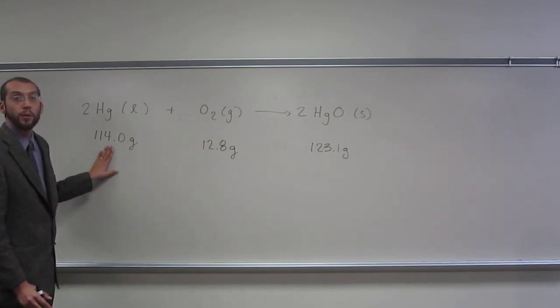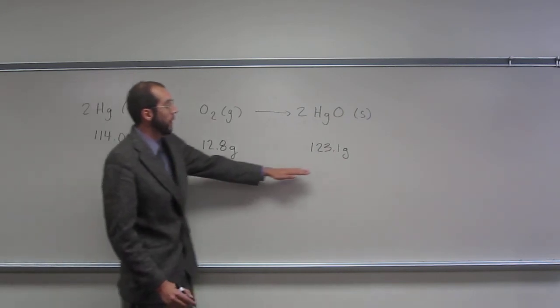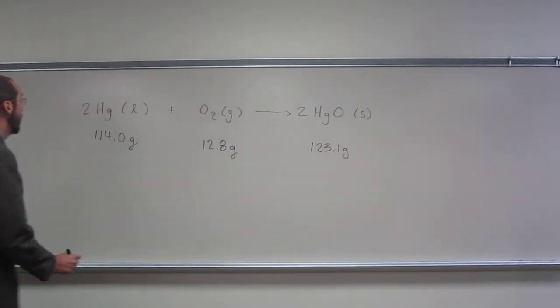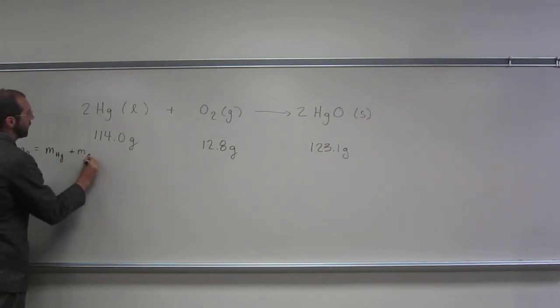What they're saying is all of this was reactive. If we got this much product, all we really have to do to figure out how much oxygen is left over is just take the mass of the product and take the mass of mercury. The mass of the product is the mass of mercury plus the mass of oxygen that was reactive.